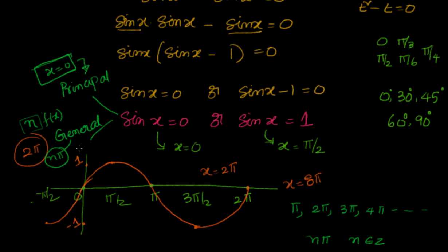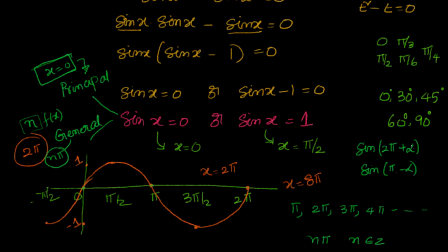Why do we have a general solution? Because all trigonometric functions are periodic — their values repeat after an interval equal to their period. For sin, the period is 2π. We know that sin(2π + α) = sin α, and also sin(π - α) = sin α. When we put α = 0, we get sin(2π) = 0 and sin(π) = 0, giving values π, 2π, 3π, 4π — all satisfying sin x = 0. So the general solution is x = nπ and the principal solution is x = 0.